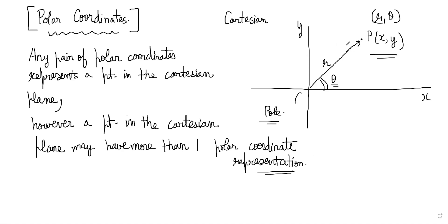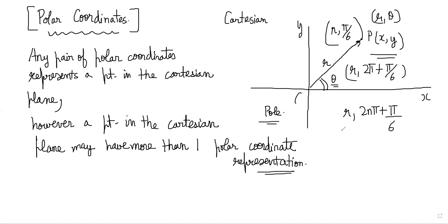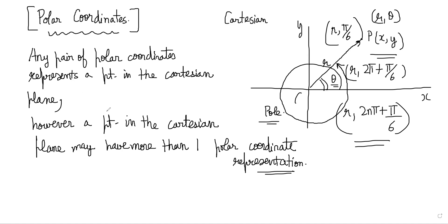For example, if a point is r comma pi by 6 (which is 30 degrees), it is the same point as r comma 2pi plus pi by 6. All such infinite representations where the angle differs by full rotations represent the same point. Therefore, the number of polar coordinates possible for a single point in the cartesian plane is more than one.